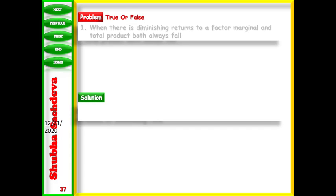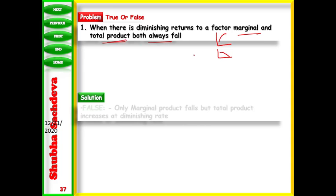Next: when there is diminishing returns to a factor, both marginal product and total product always fall. This is false. In the second stage — diminishing returns — marginal product falls but TP increases at a diminishing rate. TP does not fall; only MP falls.